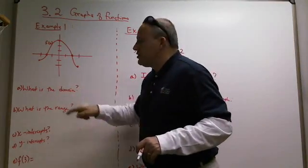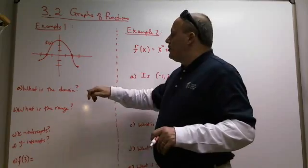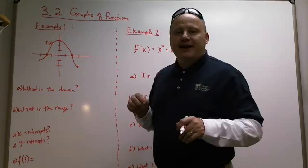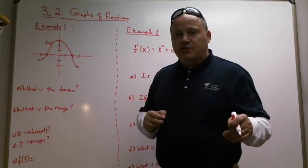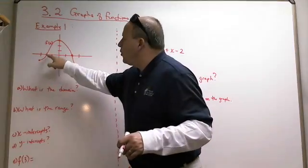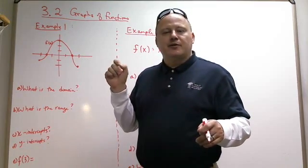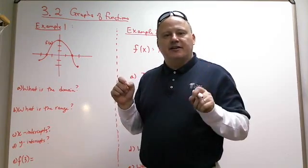The first one is, what is the domain? The domain, remember, is the x-coordinates. Now, a lot of people when they see a graph and they ask for the domain, they know it's the x-coordinates, so what they do is start looking for ordered pairs that are listed on the graph. You've got to understand the ordered pairs with the big solid dots on the graph, those are points on the function.